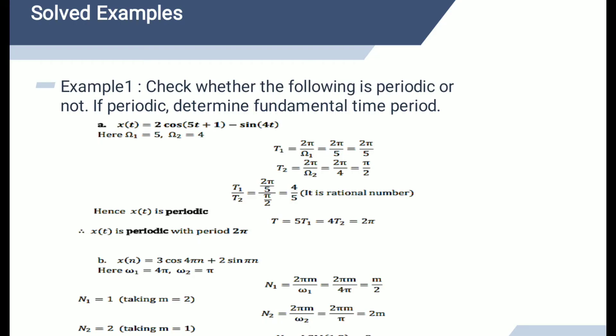Example one: check whether the following signal is periodic or non-periodic. If periodic, determine the fundamental time period. A signal which has a definite pattern and repeats itself at regular intervals of time is called a periodic signal. A signal which does not repeat at regular intervals of time is called a non-periodic or aperiodic signal.